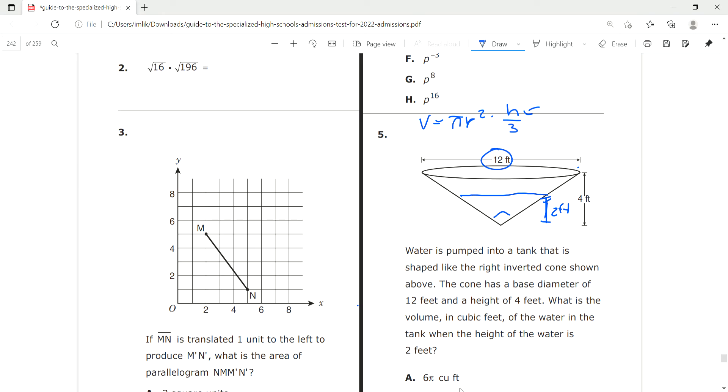So our main goal now is step one: find the volume. But in order to find the volume, we have to find the length of this diameter when we're at 2 feet. So how do we do that?